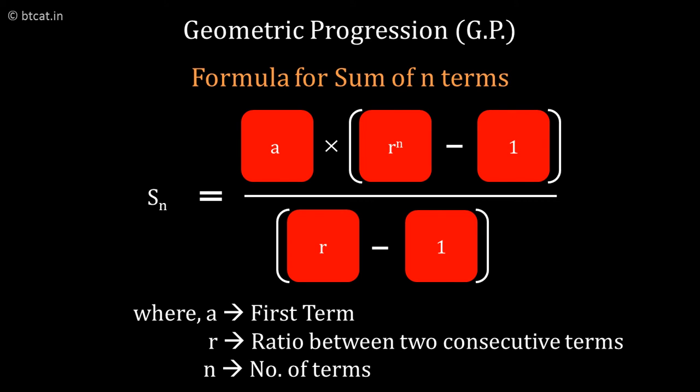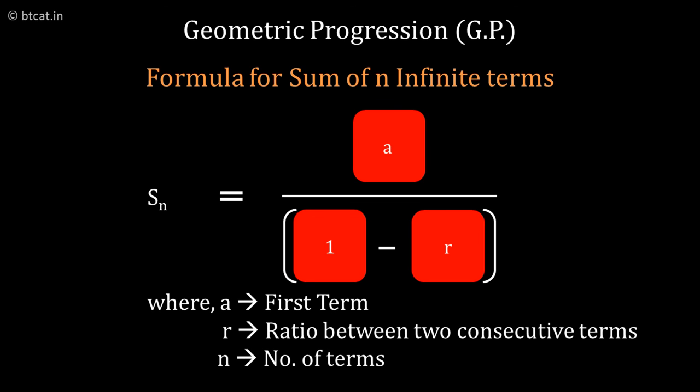So let us take the last formula. We will have a detailed video on that. Sum to infinite terms of GP and the formula is A upon 1 minus R. This is till infinity terms. Of course, this is valid only when the R absolute value is less than 1.